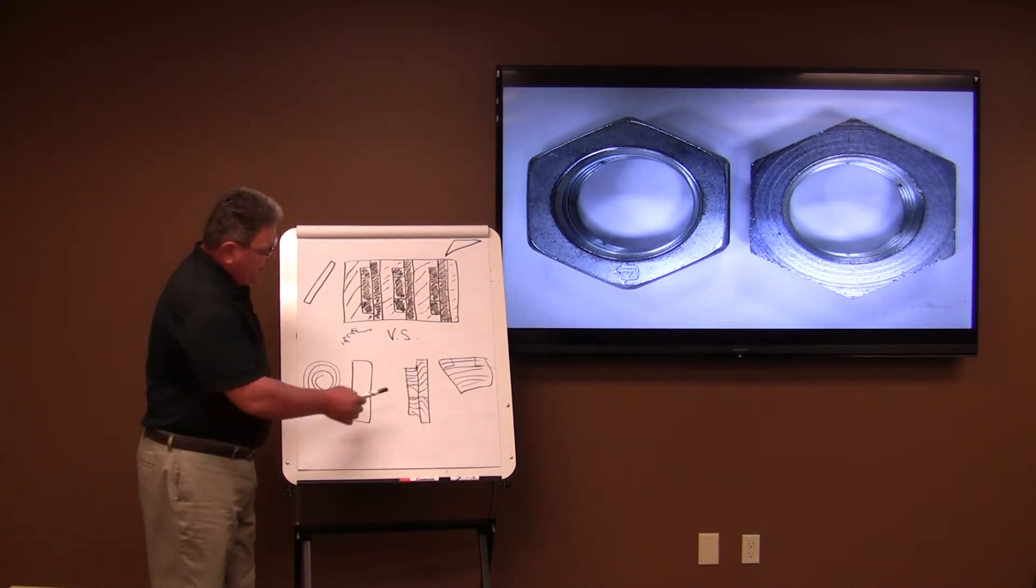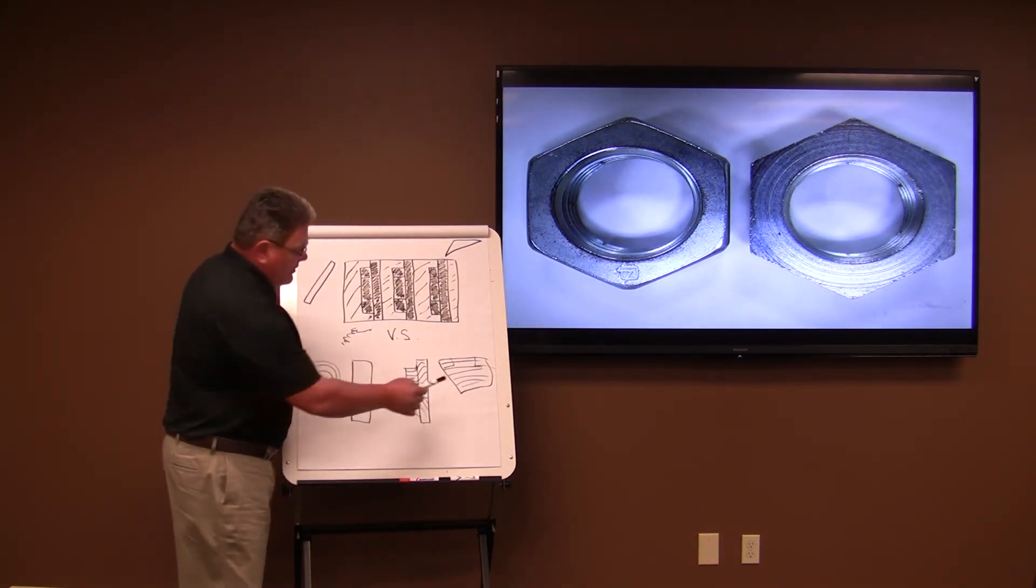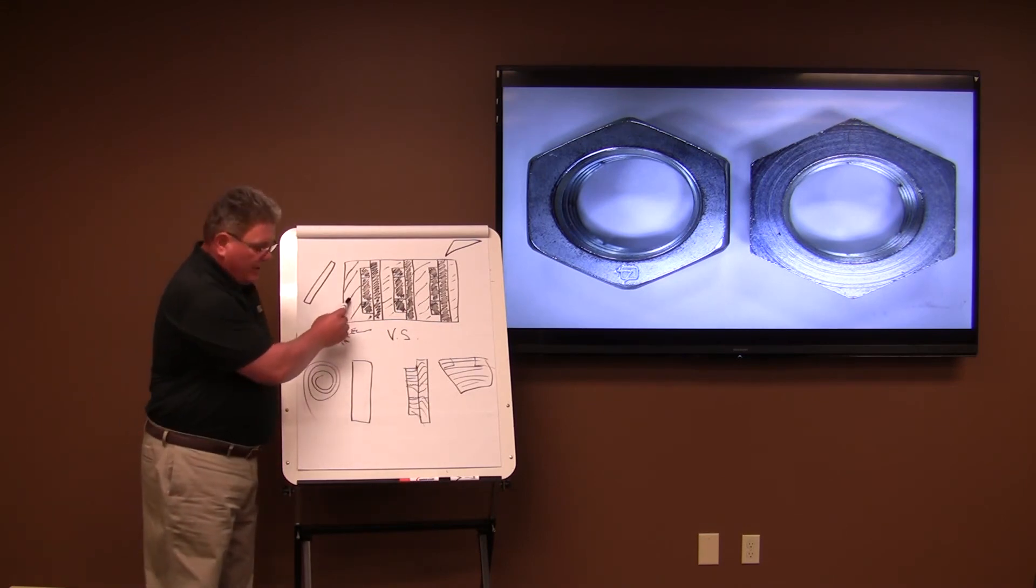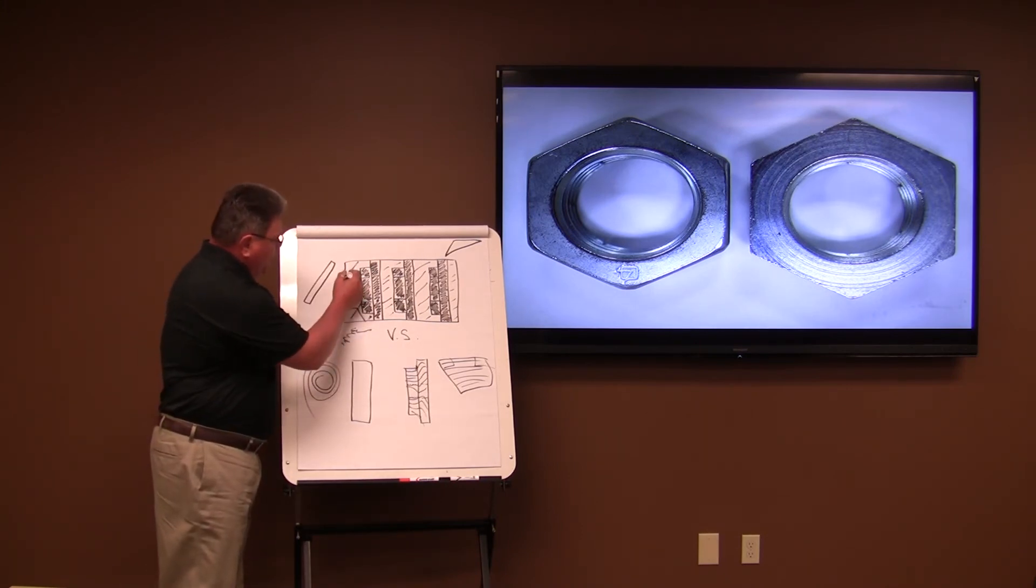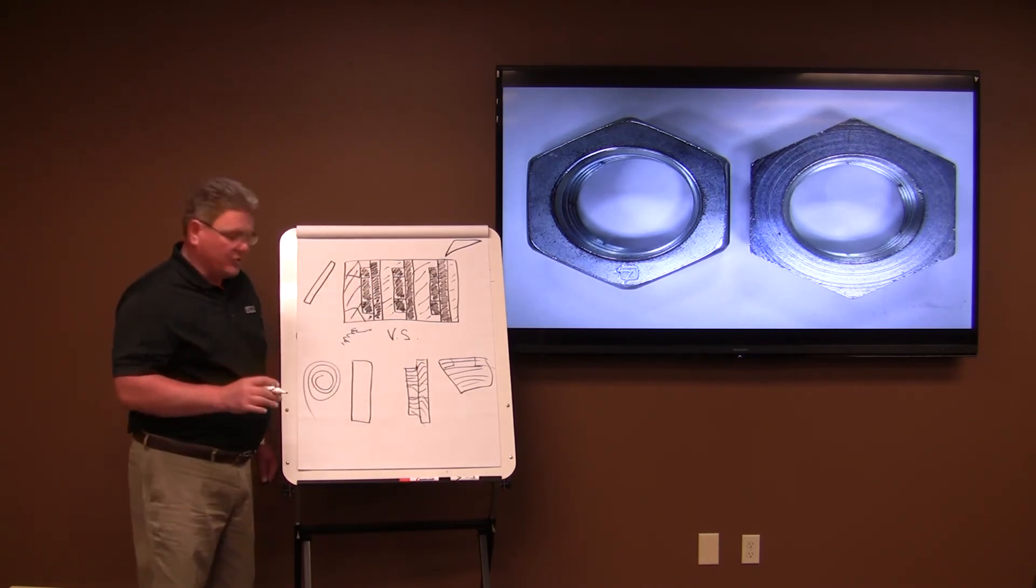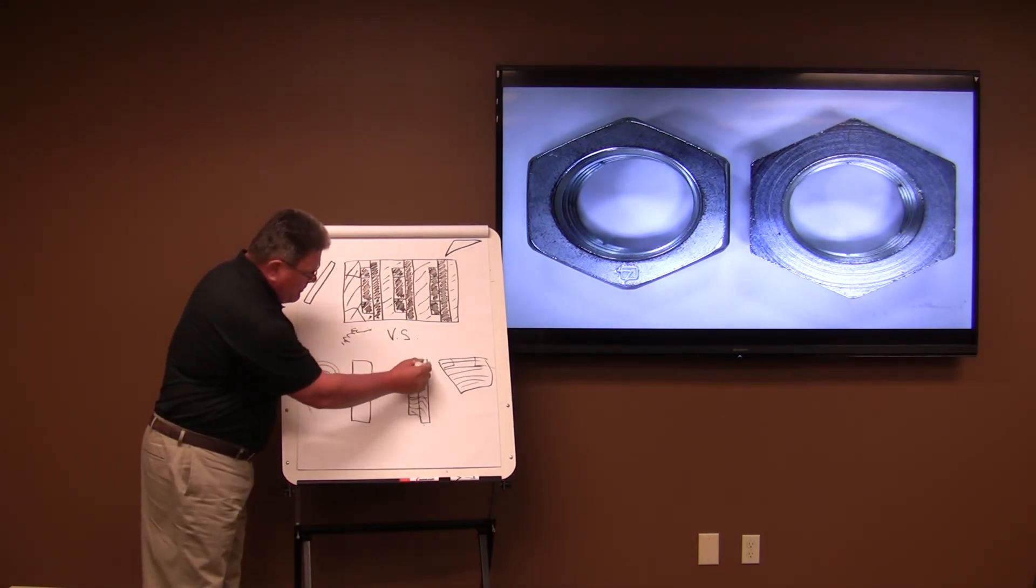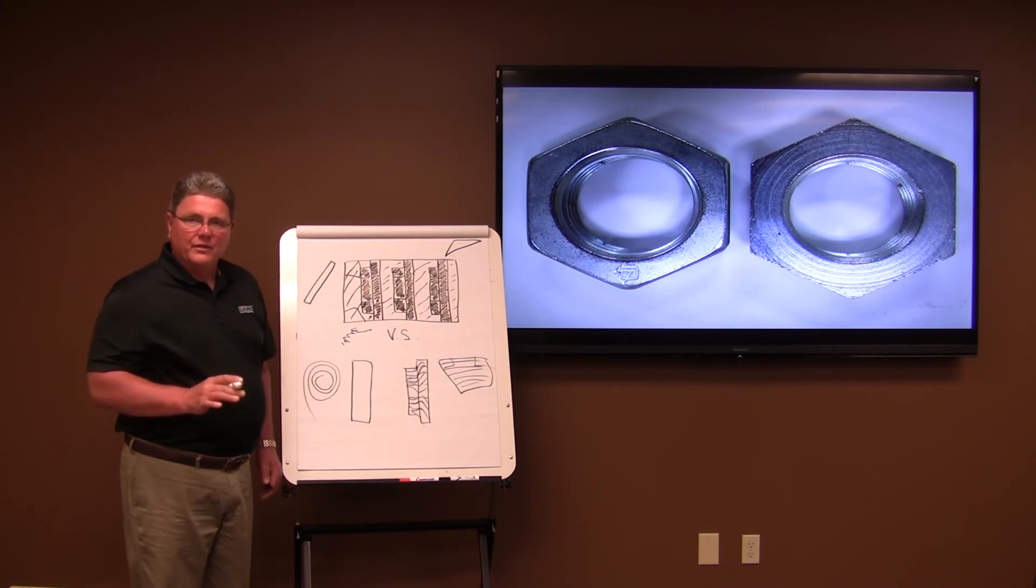Further, if we take a look at normal bar stock material or wire, we'll see that there is an inherent grain flow within the strands of that raw material. When we machine the part, we interrupt that grain flow and we cut away that grain and we sacrifice strength. When we cold form, we force that metal and that grain to continue to flow and match the contour of the net cold formed blank. That is the benefit of cold forming in select cases versus screw machining.